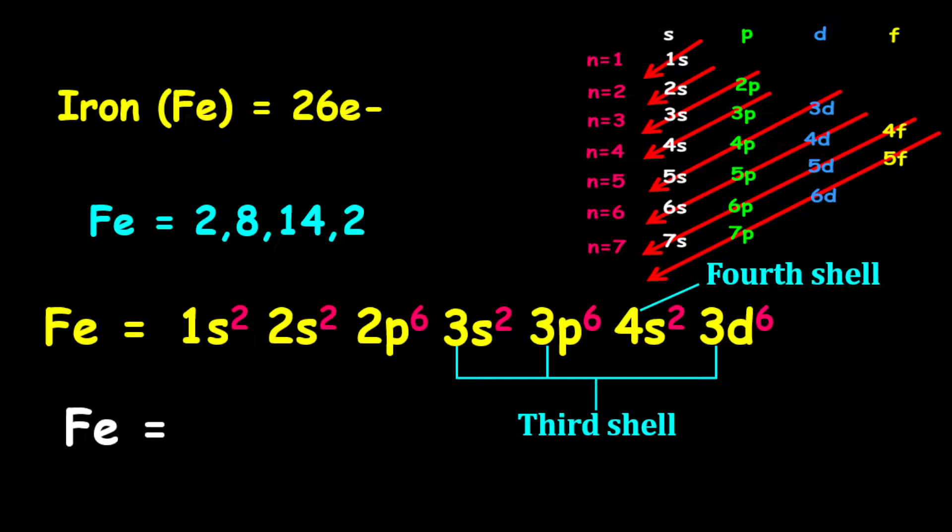For the shortened electron configuration, it is given as argon, followed by 4s2, then 3d6.